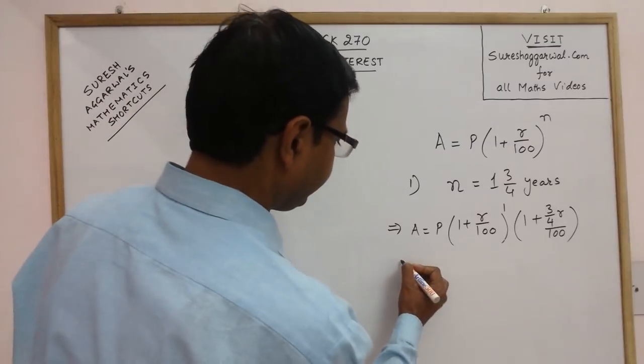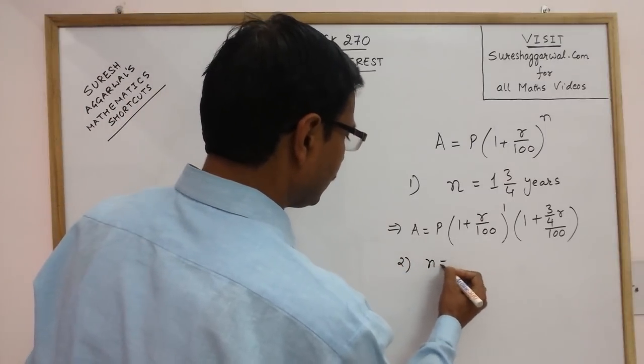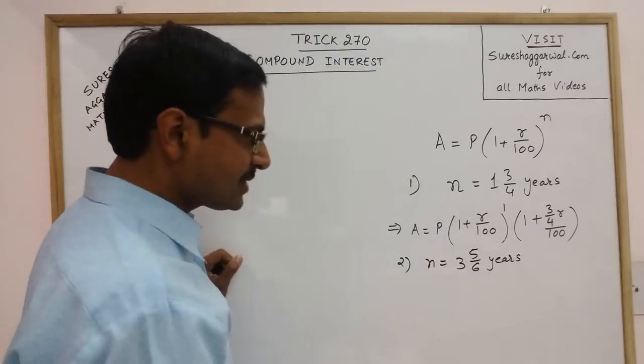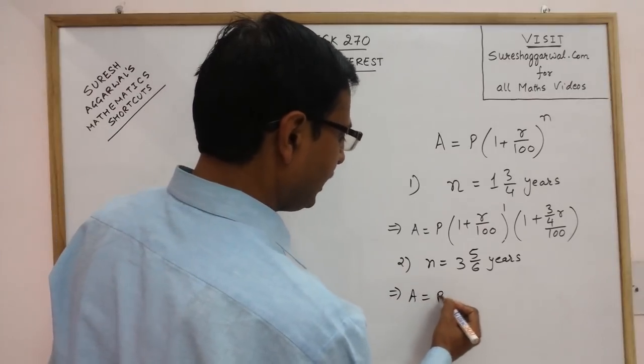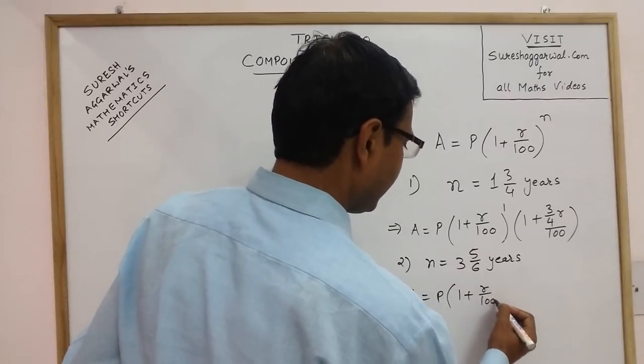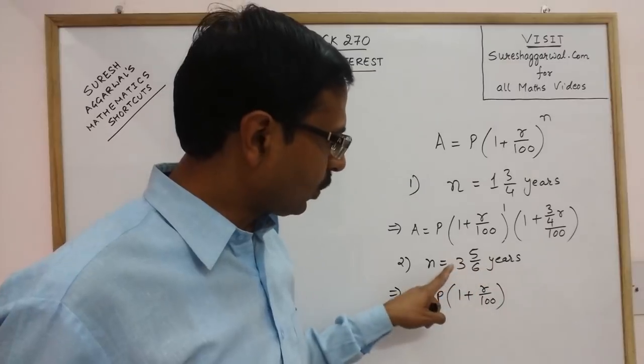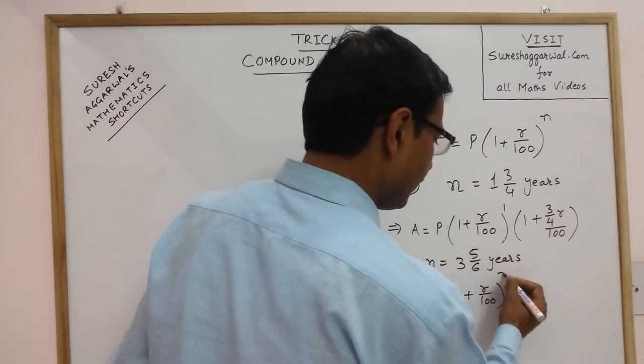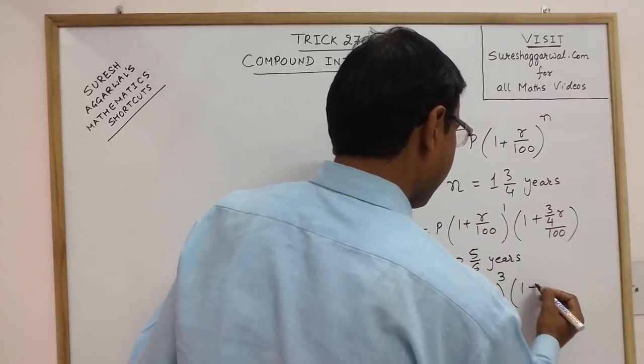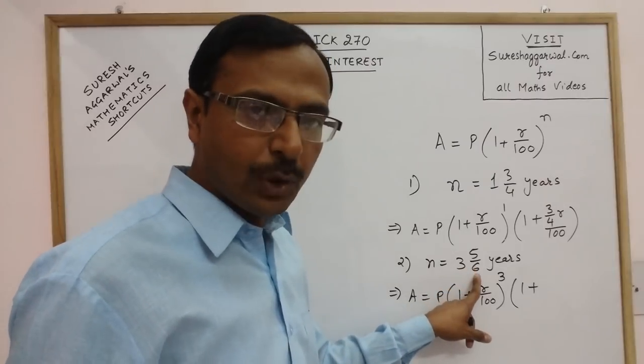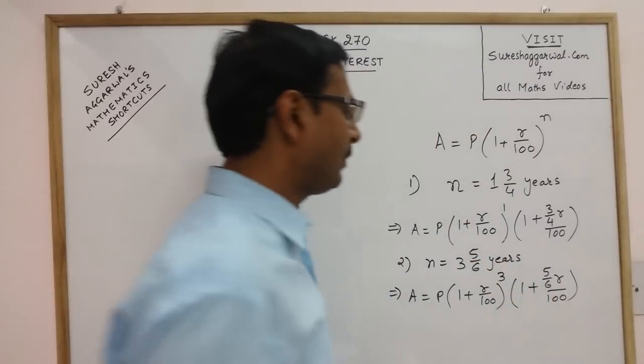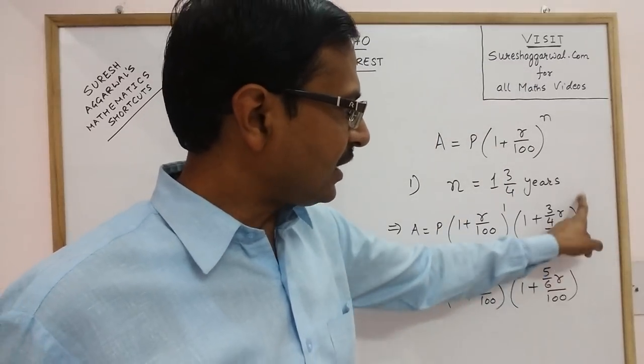Yet another example, say we have n equal to 3 5/6 years. Now in this case, amount will be found out by P into, the first part will be 1 plus R upon 100 and the power will be the whole number, exact whole number. So here is 3, so power 3 and the second term will have 1 plus, now the coefficient of R will become 5 upon 6. So 5 upon 6 R upon 100. Remember, the power of this second term is always 1.